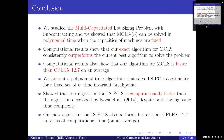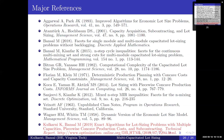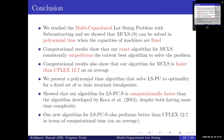To conclude, in this paper we studied the multi-capacitated lot sizing problem with and without subcontracting, and showed it can be solved in polynomial time when the machine capacities are fixed. Computational results show that our exact algorithms for MCLS consistently outperform the current best and are faster than the state-of-the-art solver. We also present a polynomial time algorithm for the lot sizing problem with piecewise concave costs (LSPC) with a fixed set of breakpoints, showing that even though the theoretical complexity matches the previous best, our algorithm is computationally much faster.